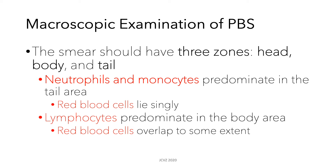For example, in the tail area, this is usually dominated by neutrophils and monocytes, while red blood cells lie singly and do not clump. In the body area, you can see that lymphocytes are the predominating white blood cell type, and red blood cells in this area sometimes overlap.